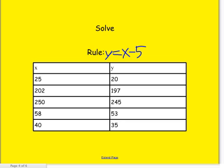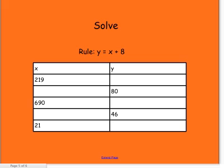Got that class? Now we're going to solve another one. But this time we have the rule, but we need to figure out the answer. So the rule is y equals x plus 8. 219 plus 8 equals what? It's 227. Yes, good job.